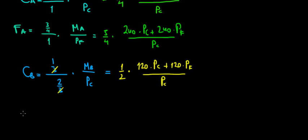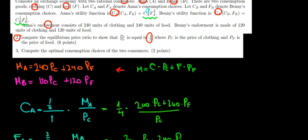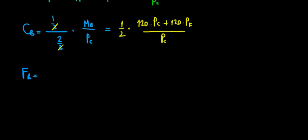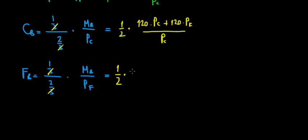Now the same logic for Benny's food. The food of Benny equals the share he spends on food — the exponent 1 over 3 relative to the total 2 over 3 — times Benny's income divided by the price of food. Since 1 over 3 divided by 2 over 3 equals 1 over 2, it's 1 over 2 times (120 times price of clothing plus 120 times price of food), divided by the price of food.